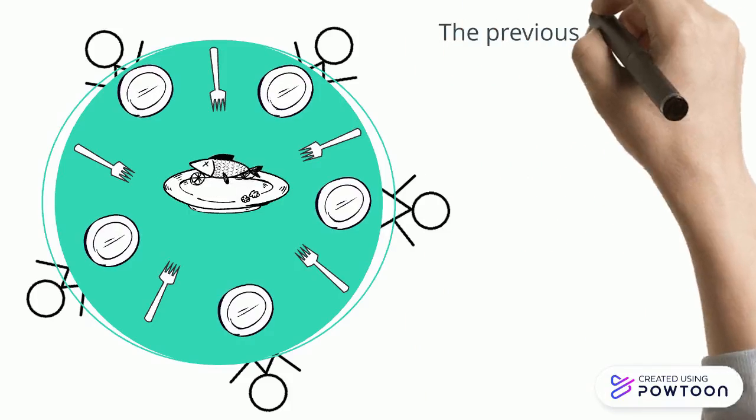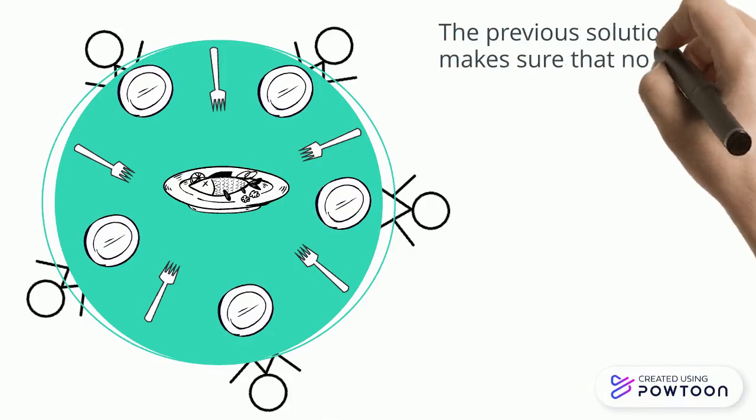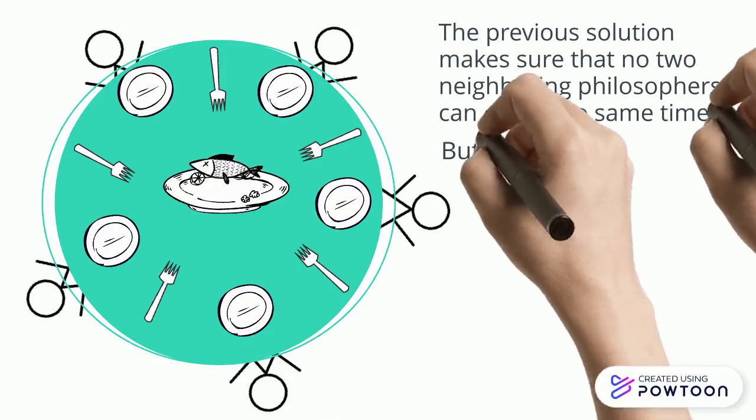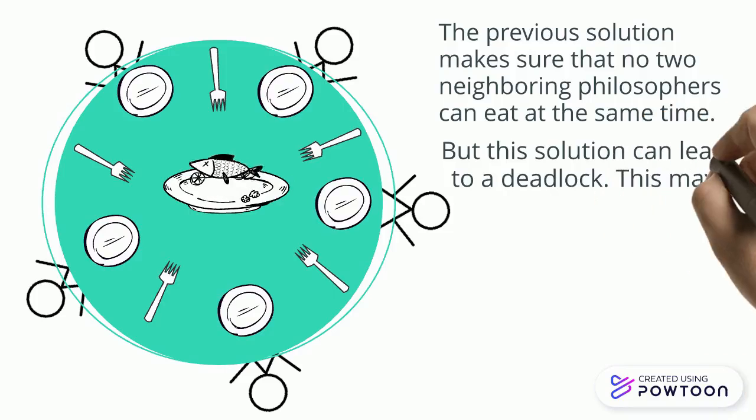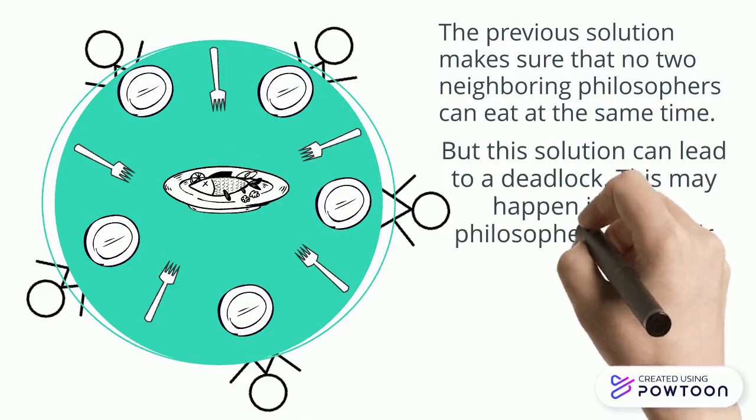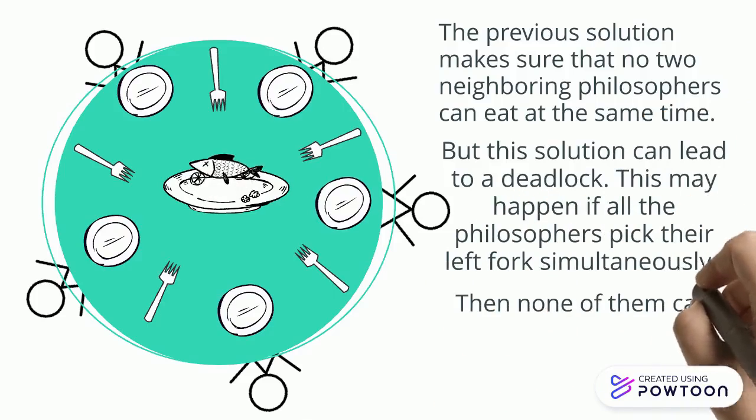The previous solution makes sure that no two neighboring philosophers can eat at the same time. But this solution can lead to a deadlock. This may happen if all the philosophers pick their left fork simultaneously. Then none of them can eat and deadlock occurs.